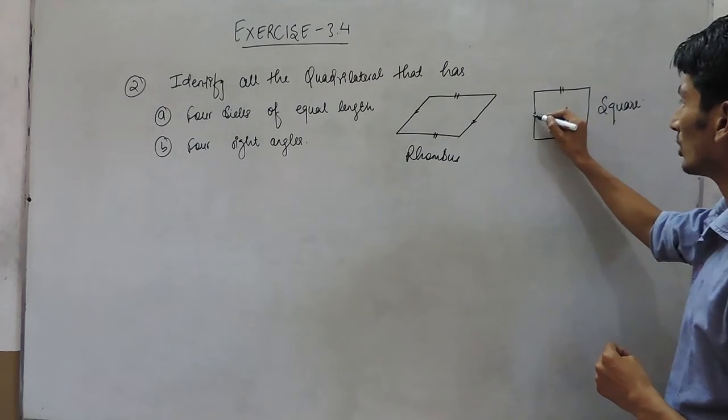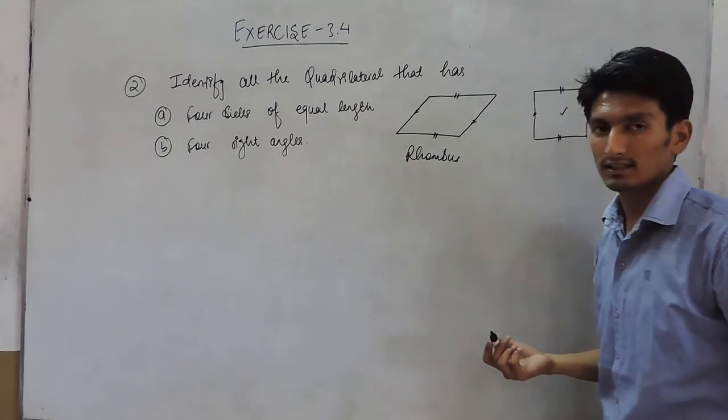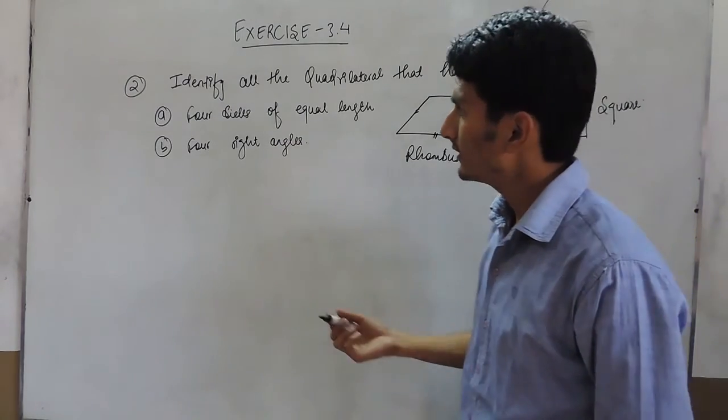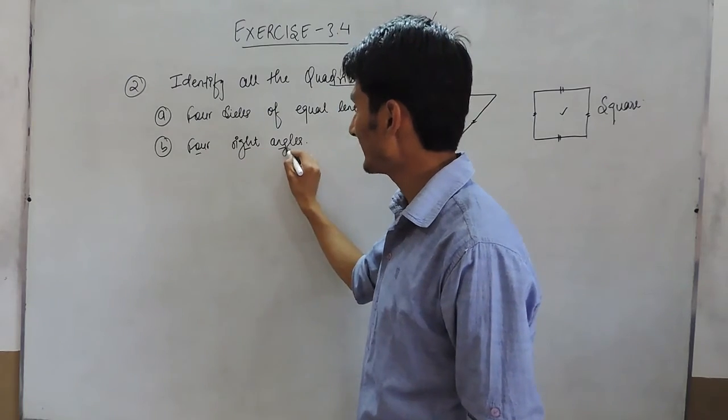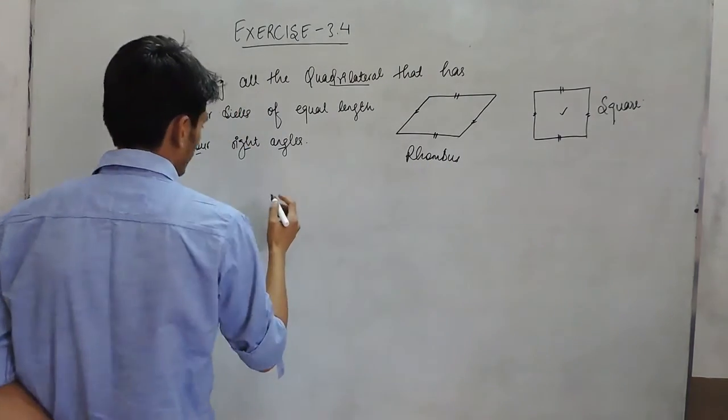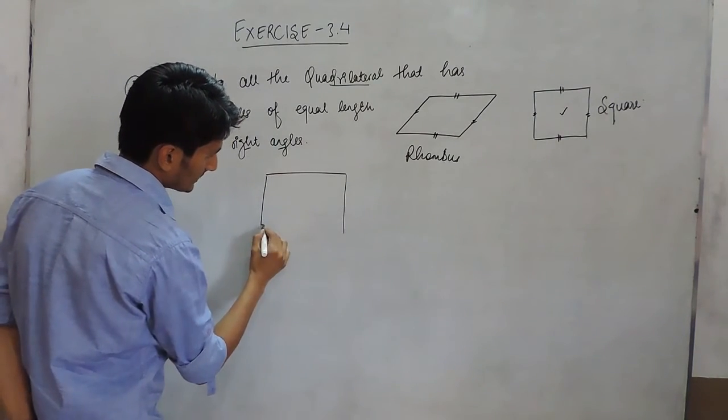Square is also a quadrilateral having four equal sides. In the second part, you have to identify a quadrilateral having four right angles.